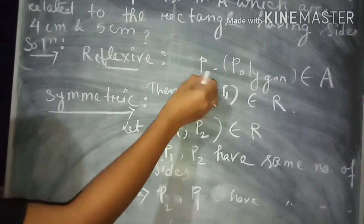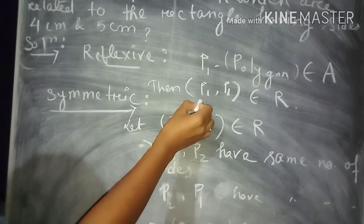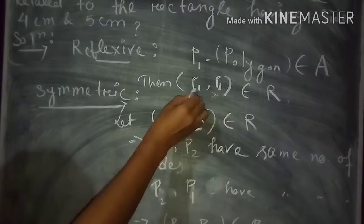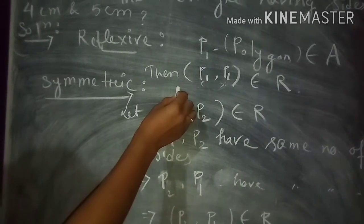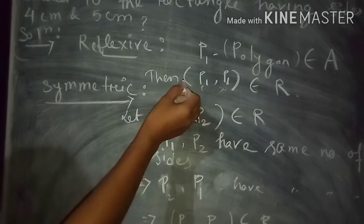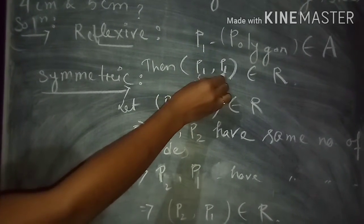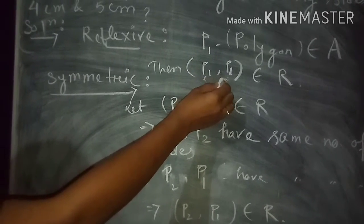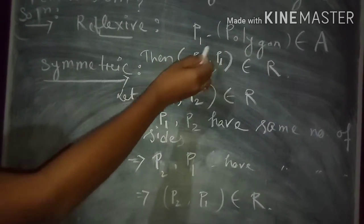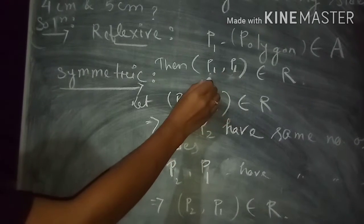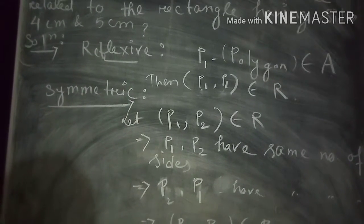For reflexivity, take any polygon P1 belonging to A. The ordered pair (P1, P1) means P1 and P1 have the same number of sides, which is obviously true. So for any P1 ∈ A, (P1, P1) belongs to R. Therefore R is reflexive.